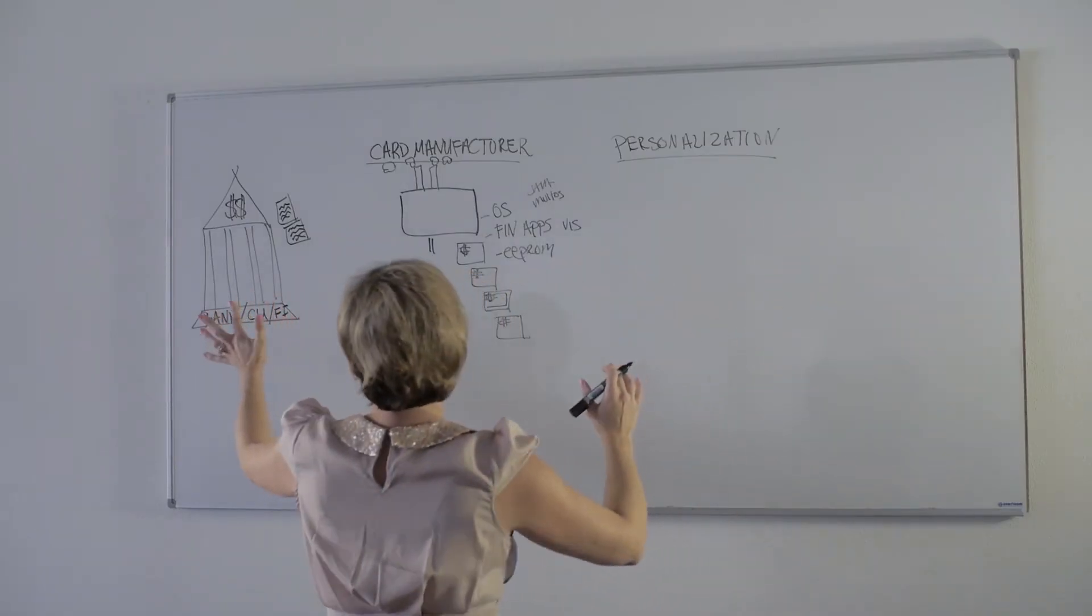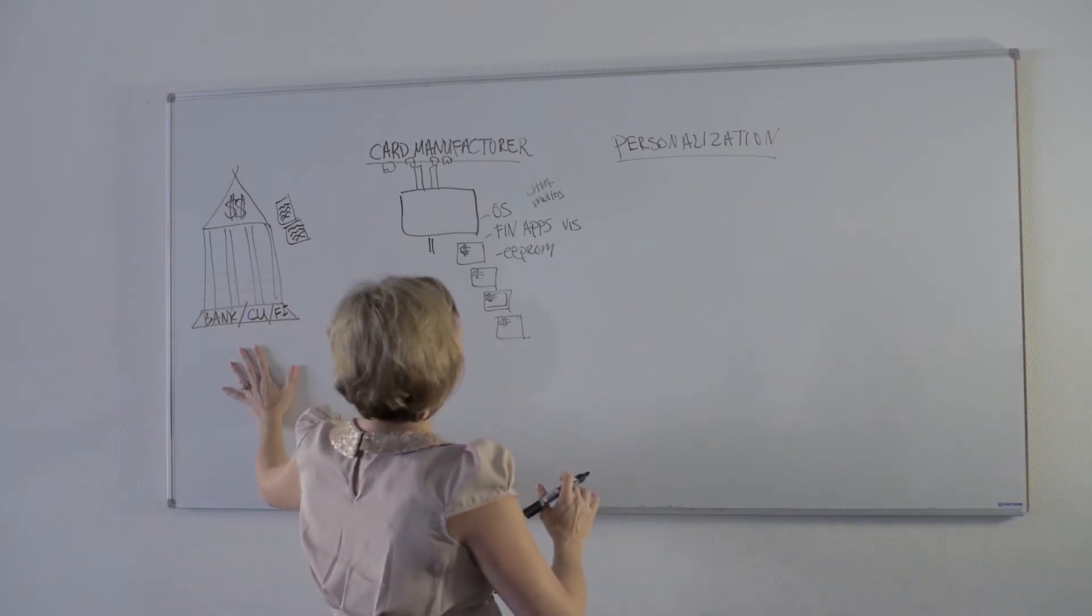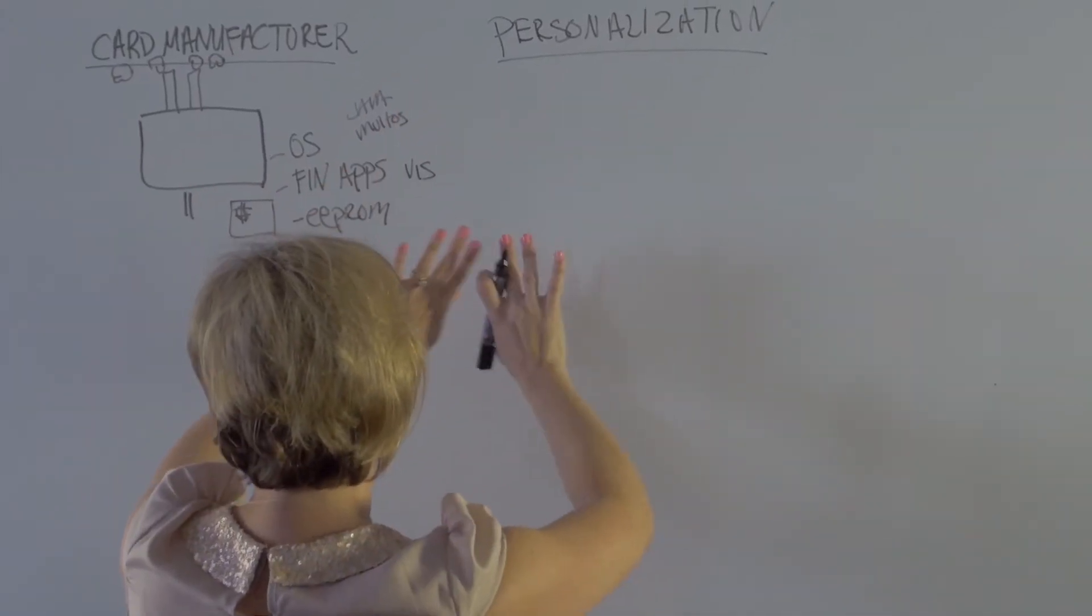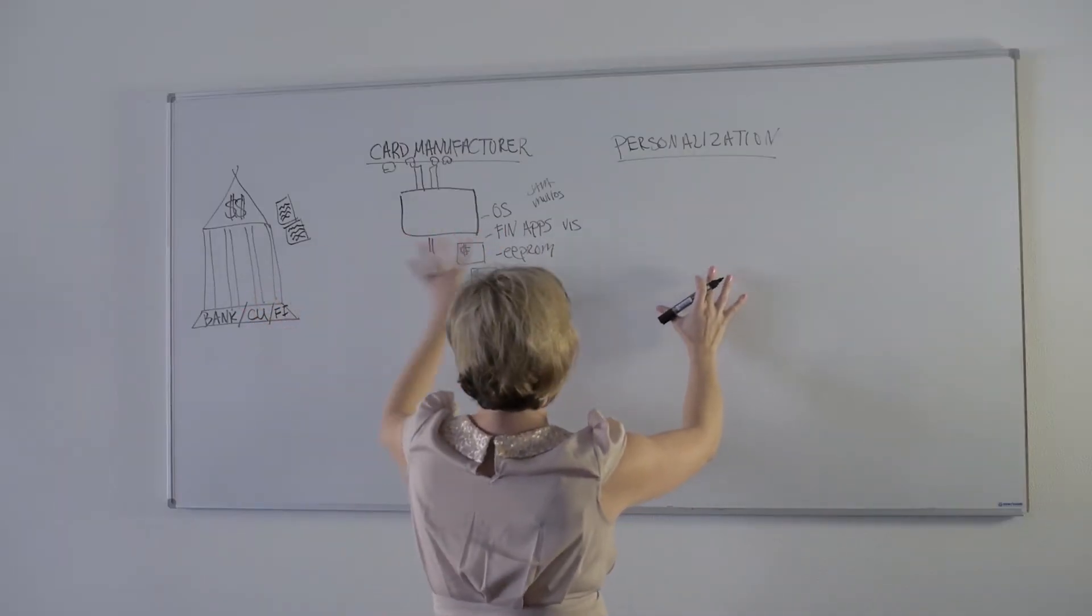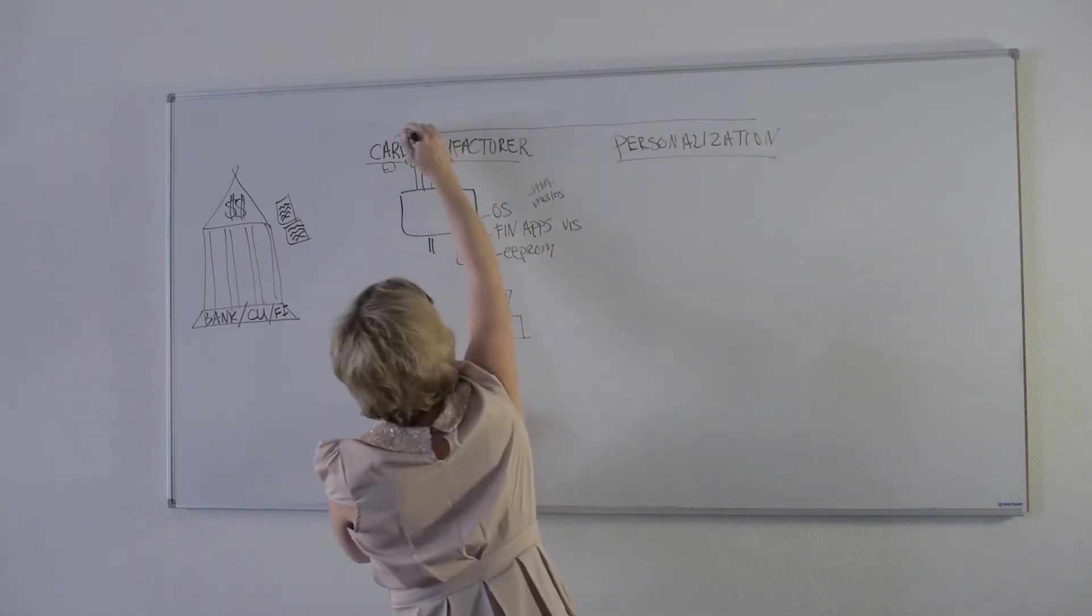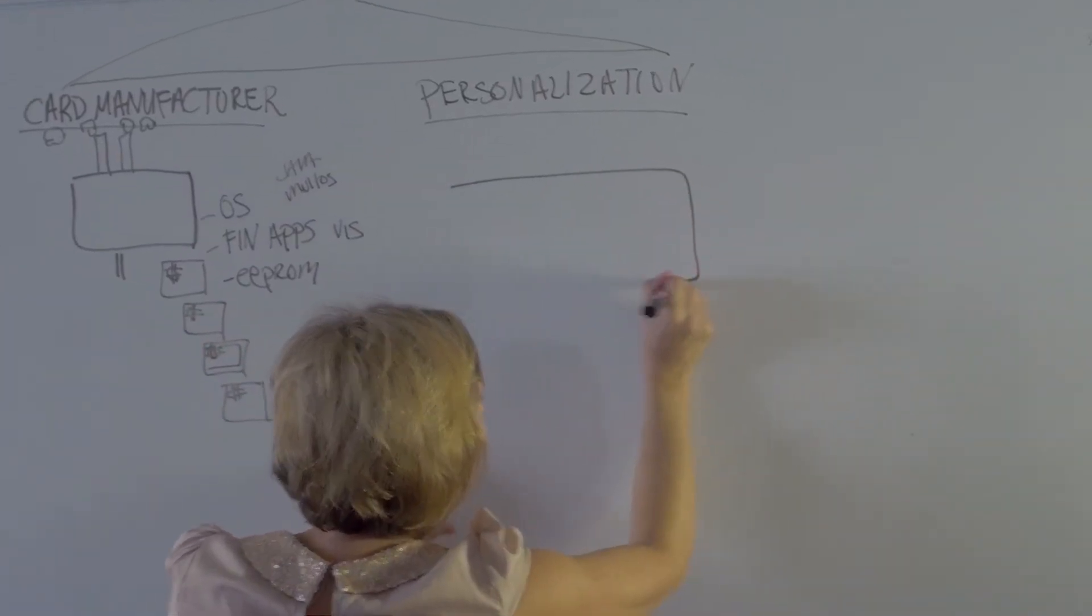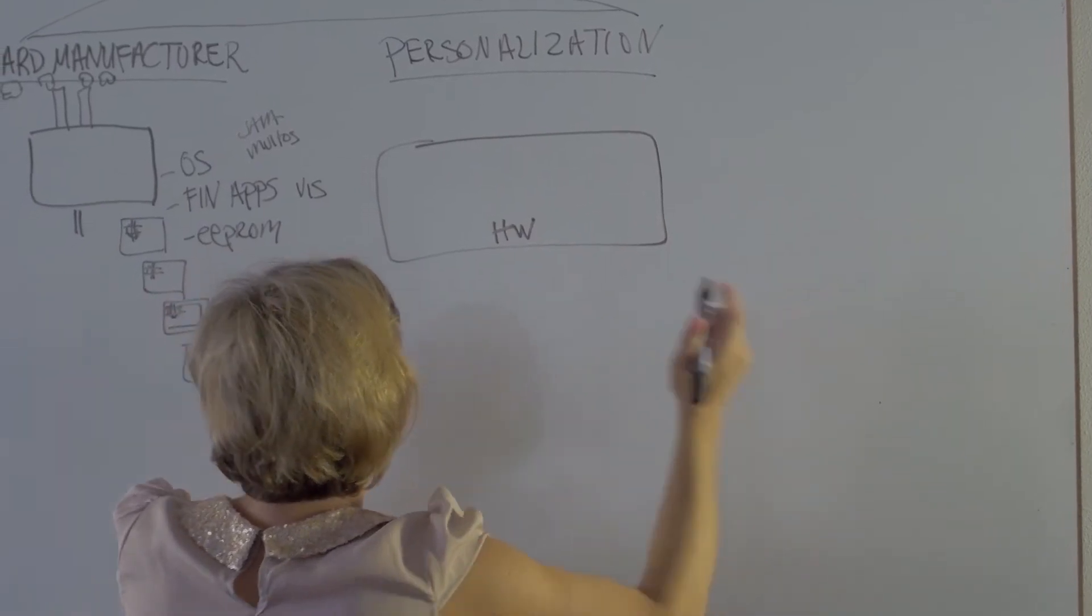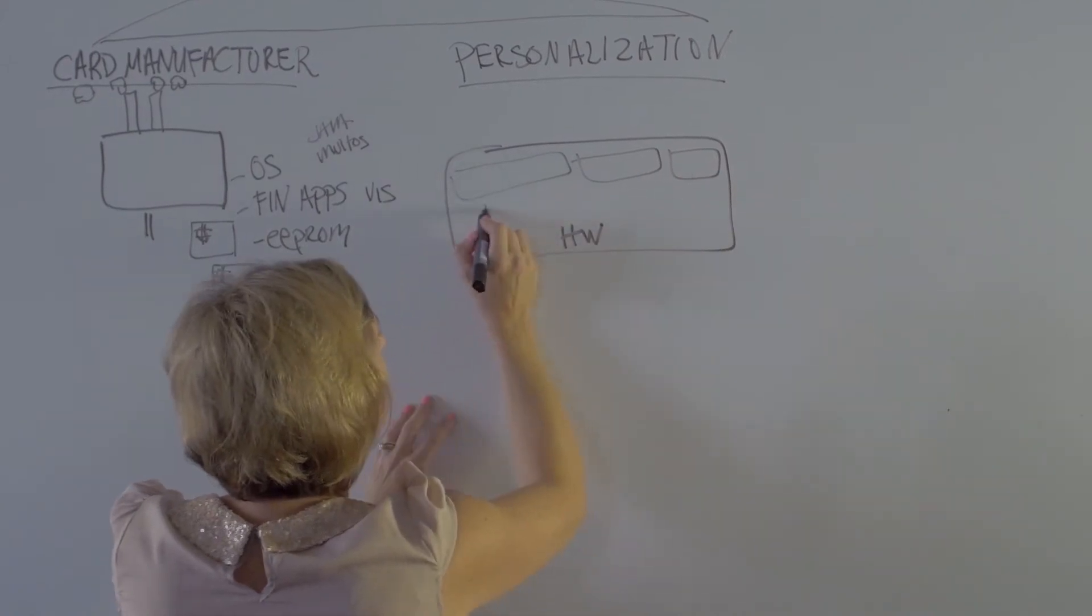Depending upon the relationships and the vendors that are managed by the FI or financial institution, sometimes the card manufacturing and the personalization are done under the same roof, sometimes they're split. But most times the actual personalization of the card profiles are outsourced. So let's just say that these are both done under the same roof. For personalization, you'd have a very large piece of hardware, an actual piece of equipment, has windows in it like this where you can actually see the cards going through the equipment.